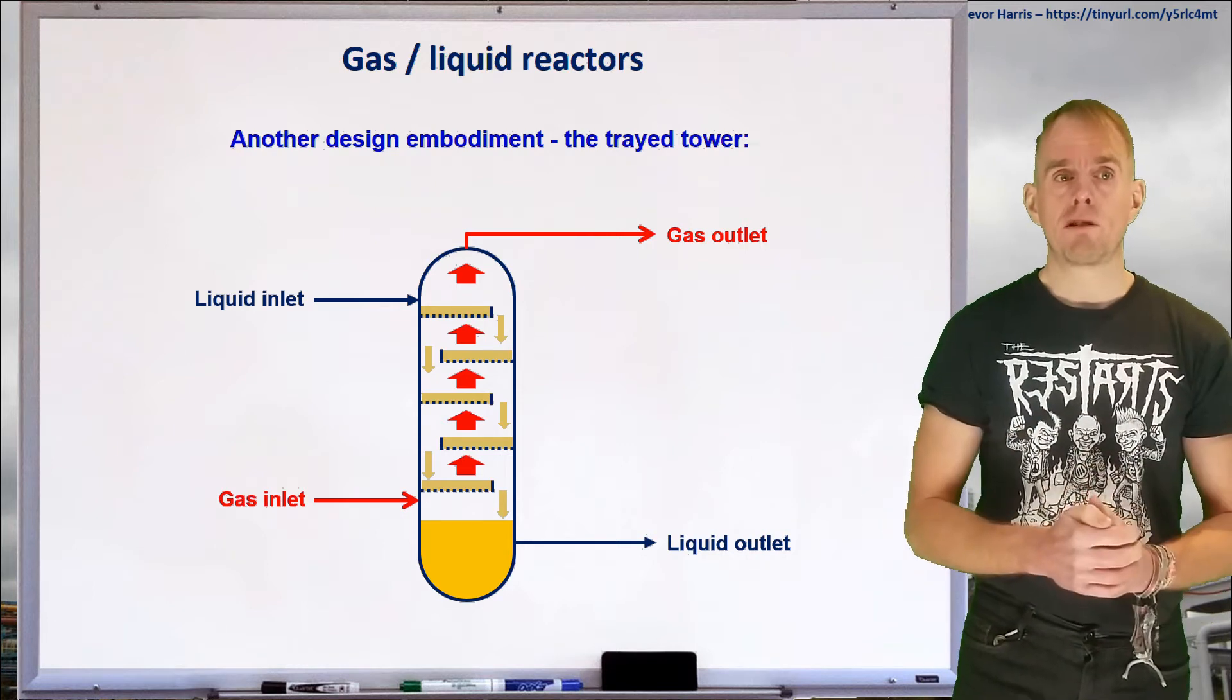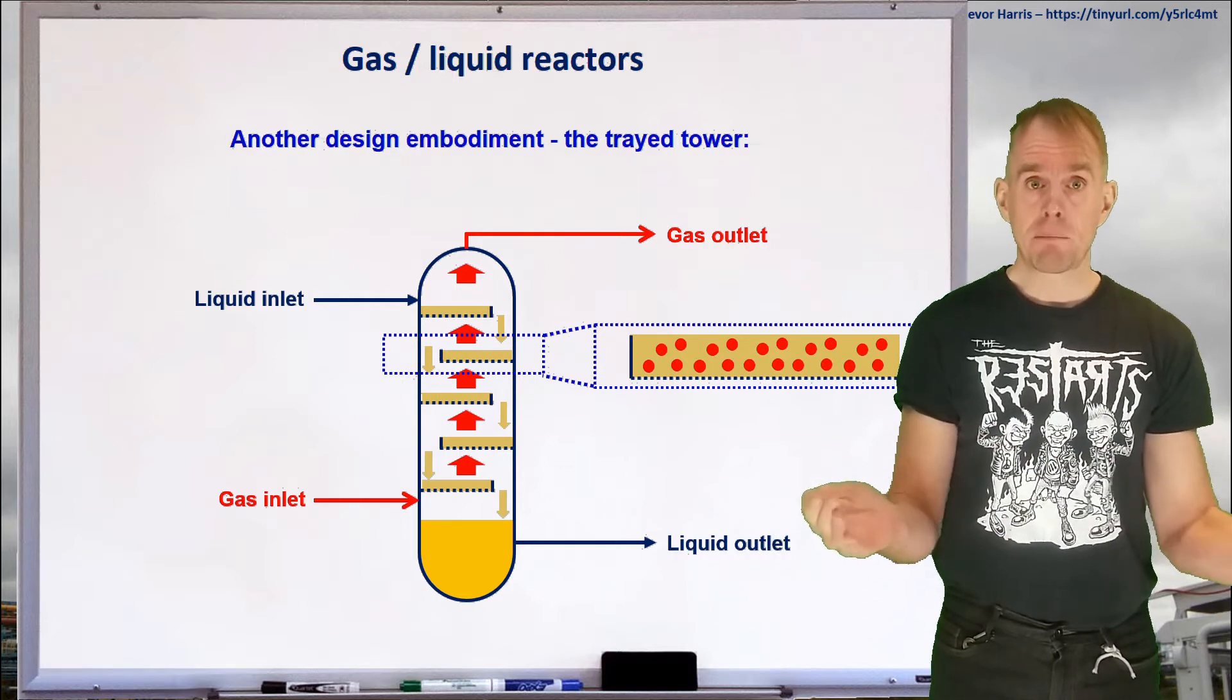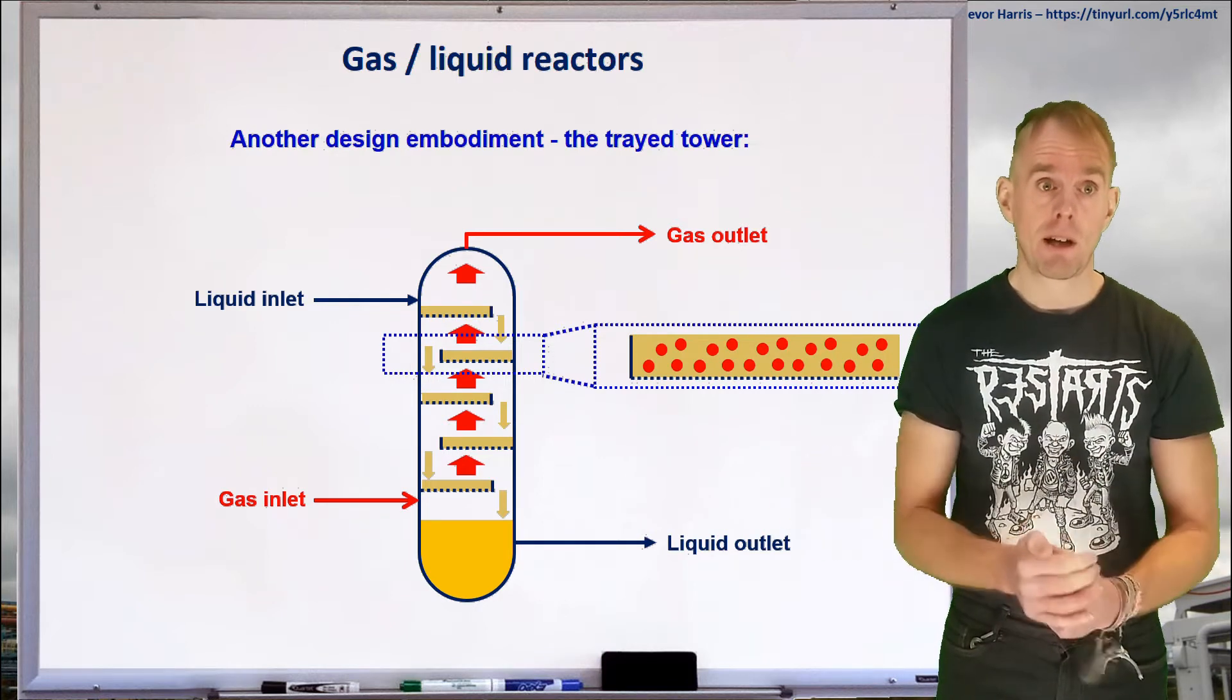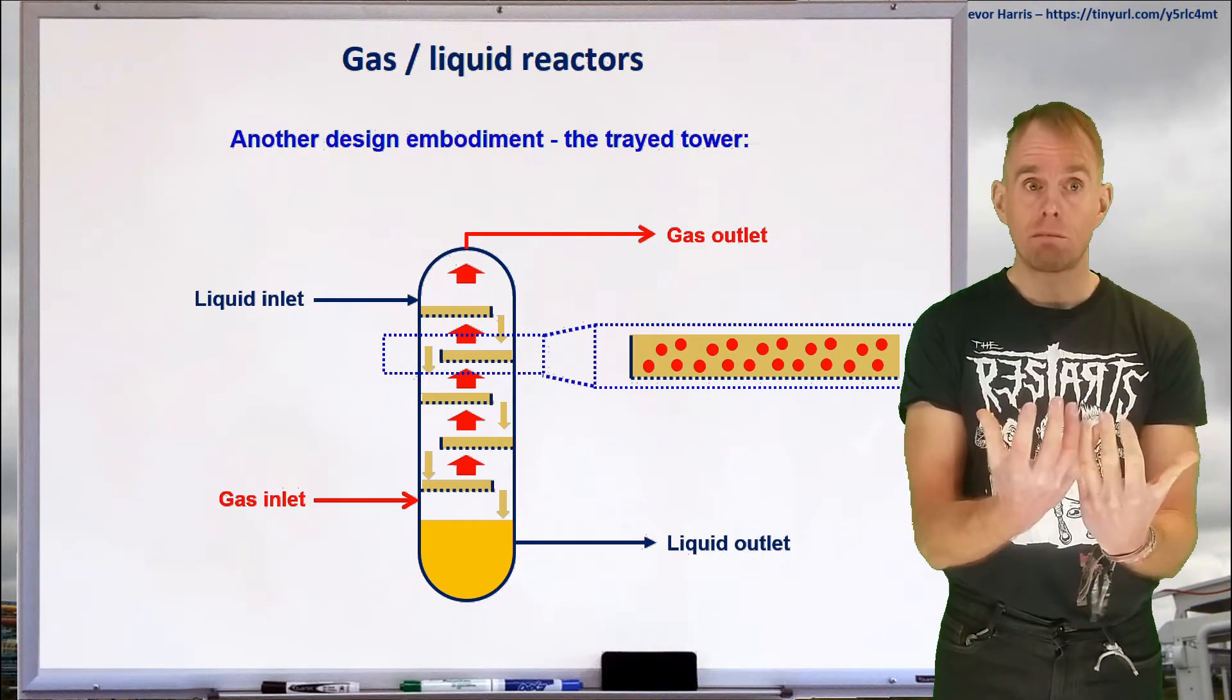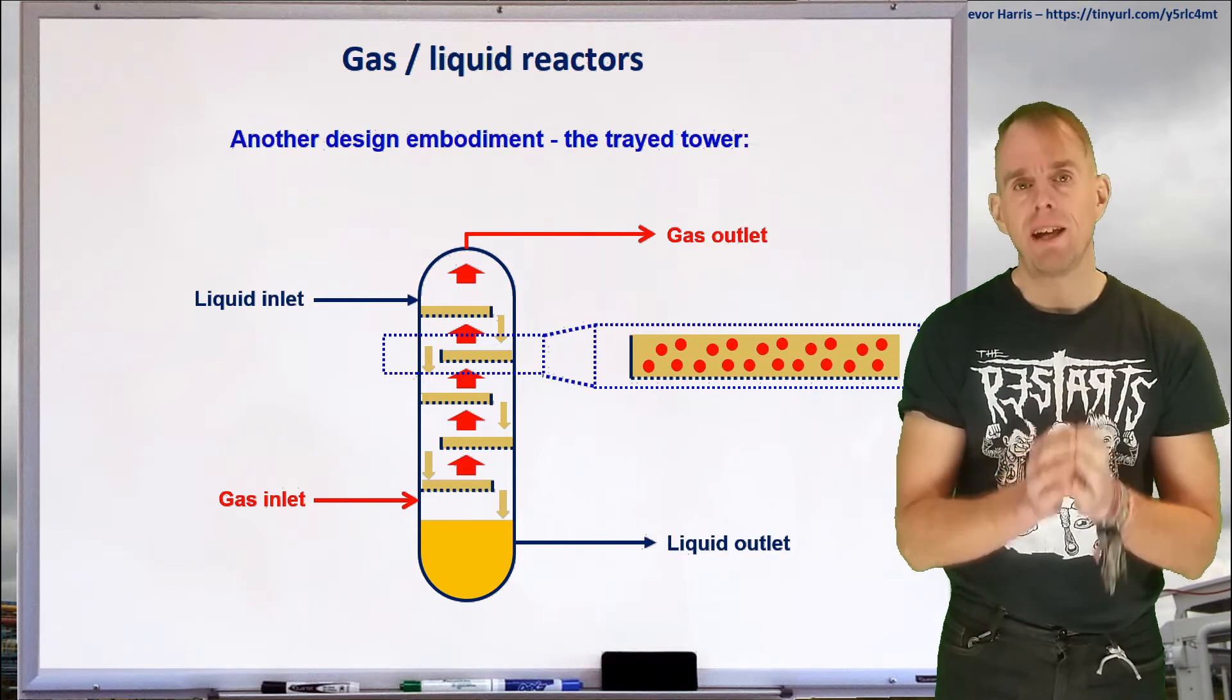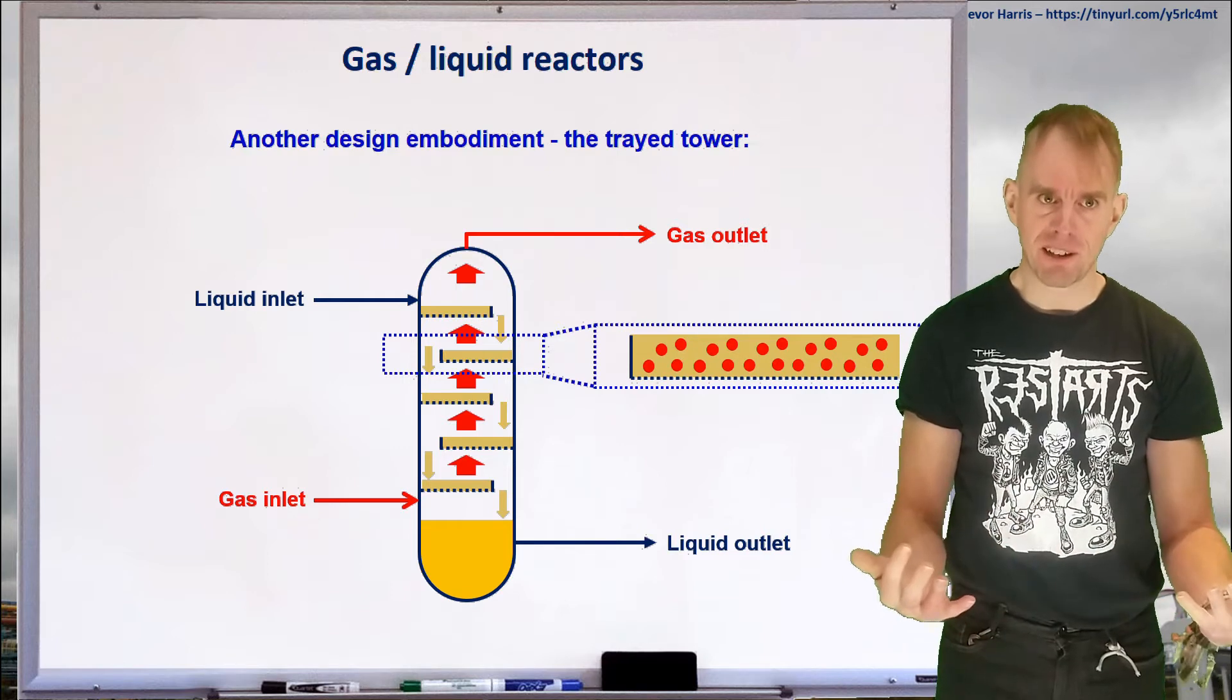So if we zoom in on one of these trays, let's see what's going on. Let's assume we've got a sieve tray, which is basically a big perforated plate. That big perforated plate has a rim on it, such that it holds back a liquid pool. That rim is called the weir. So in operation, you've got gas going up through the holes in the base of the plate, bubbling into the liquid, making many hundreds of thousands of bubbles, which of course gives you interphase surface area. The more bubbles you have, the more surface area you have, the more mass transfer you're going to have.